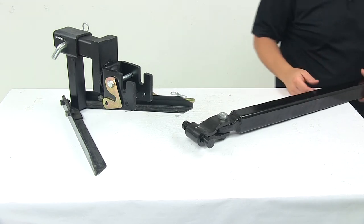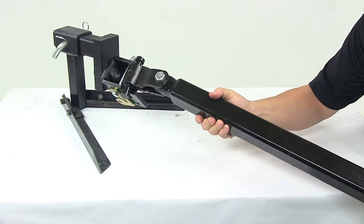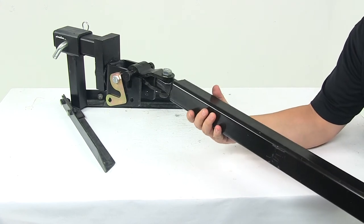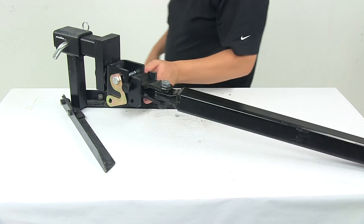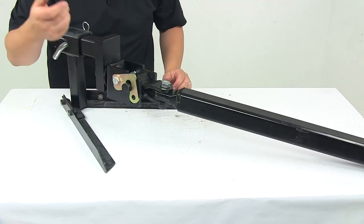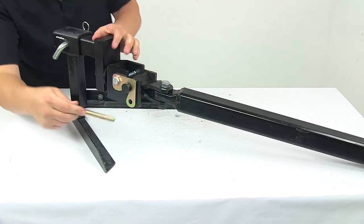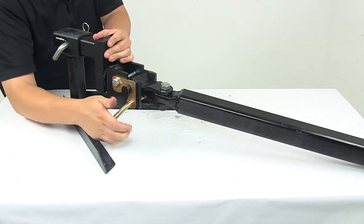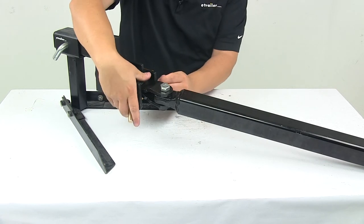So to make your connection, you would take your trailer coupler, place it in those grooves there, and then you would bring your latch plates over, those secure, and then you would take your pin, place it through, and then you'd secure it with the clip on the other side.